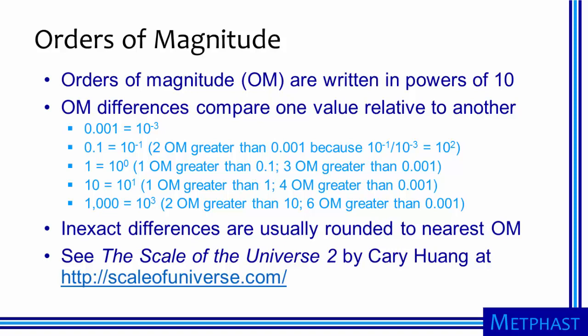When we talk about nanotechnology, we talk about dimensions much smaller than those we are familiar with. The concept of orders of magnitude is relevant when we consider these dimensions. Orders of magnitude are written as powers of 10, and orders of magnitude differences between dimensions can also be written as powers of 10.